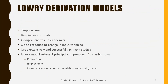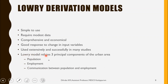Now coming to the Lowry derivation model. This model is very simple to use, requires only modest data, is comprehensive and economical, and gives good response to changes in input variables. It has been used extensively and successfully in many studies. The Lowry model relates three principal components of urban areas: population, employment, and communication between population and employment.